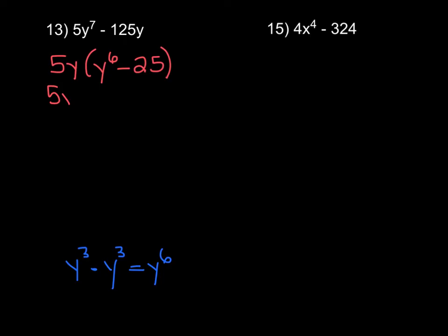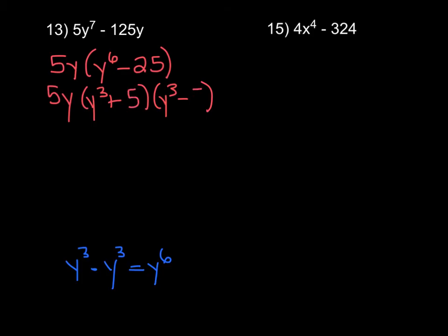I'm going to bring down the 5y factor first so I don't forget it. Then I'll take y to the sixth minus 25 and open up two sets of parentheses. The square root of y to the sixth is y to the third, so that goes in the first spot in each parenthesis. We make one addition and one subtraction, and since the square root of 25 is 5, we put 5 in the second spot. It's important to always check if you can factor further — in this case the terms are not perfect squares, so this is the final answer.